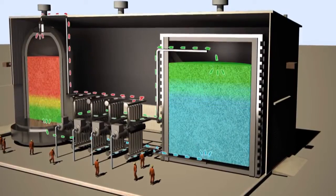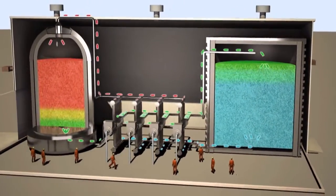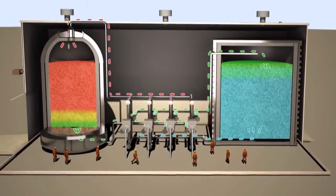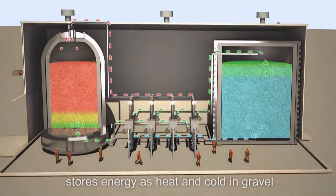An Isentropic PHES system uses a highly reversible gas cycle machine with thermodynamic processes to store electrical energy as heat and cold in stores filled with crushed rock or gravel.